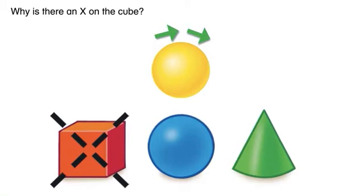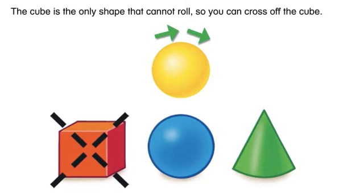Why is there an X on the cube? The cube is the only shape that cannot roll, so you can cross off the cube.